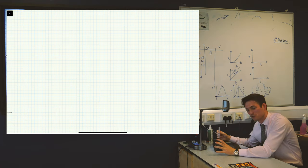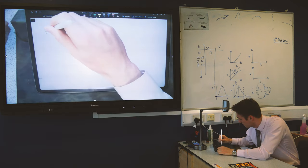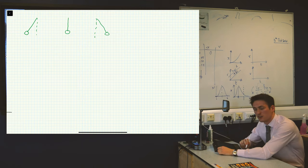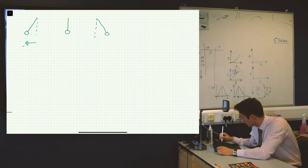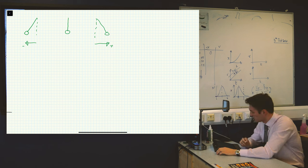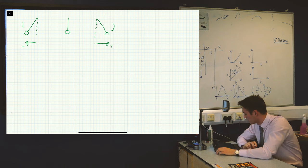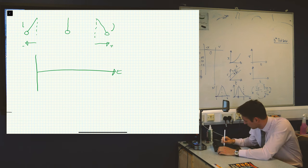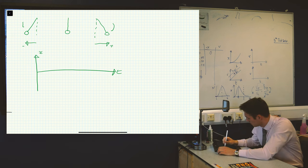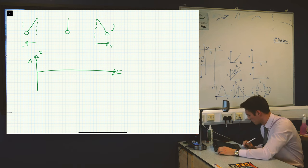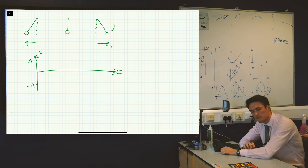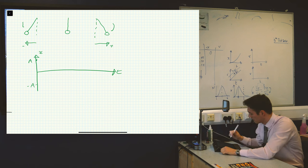If we consider a pendulum and think about three points in its motion: its leftmost point, when it's at the middle, and its rightmost point. If we define the leftmost point as the negative direction and the rightmost as the positive direction, and we start it oscillating from the maximum right point, we can draw a displacement-time graph for that motion. The first point is going to be high — we can call that A for the amplitude. Eventually it gets to the other side, to the left, which is the most negative point.